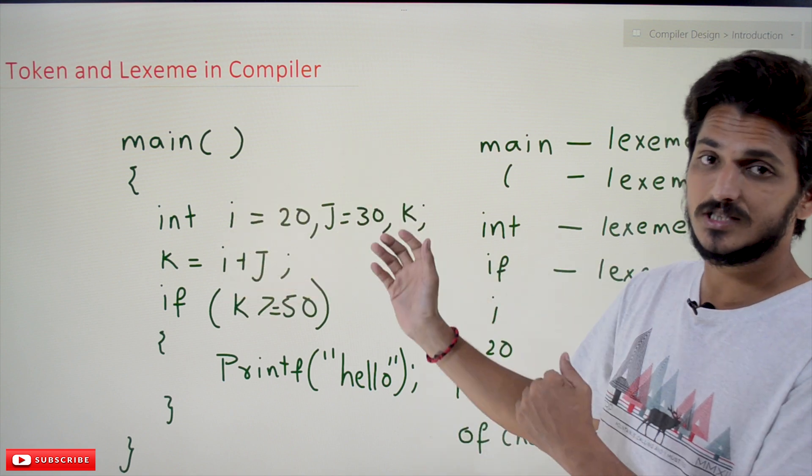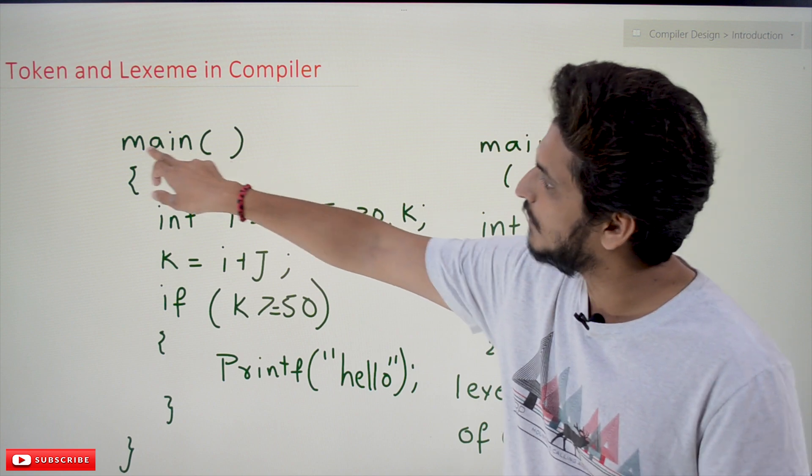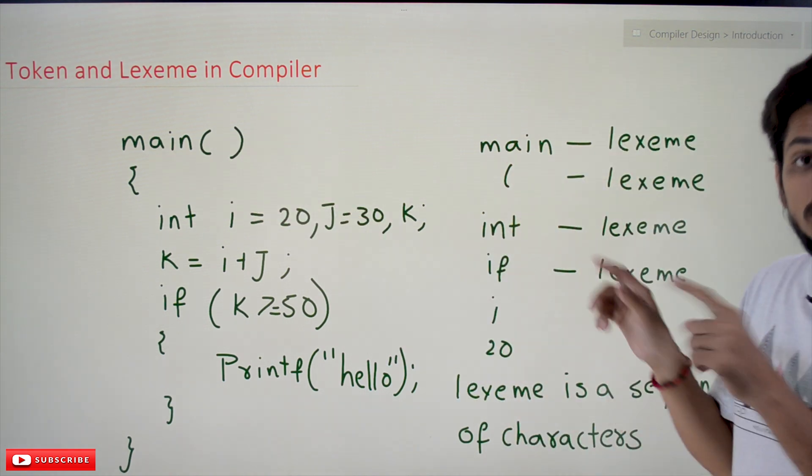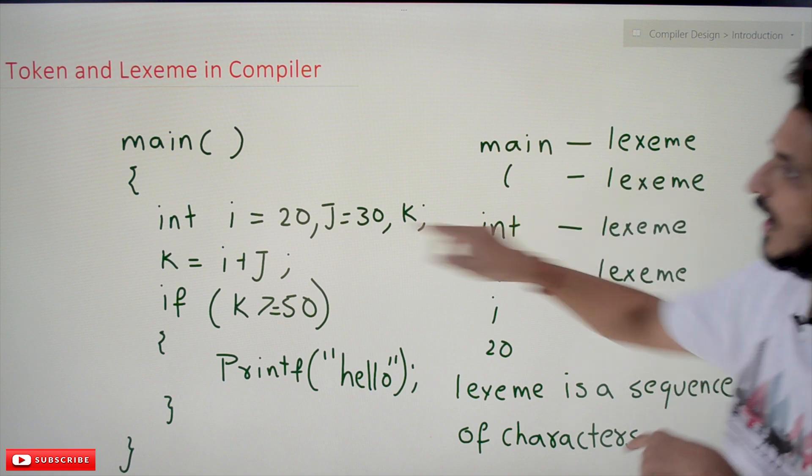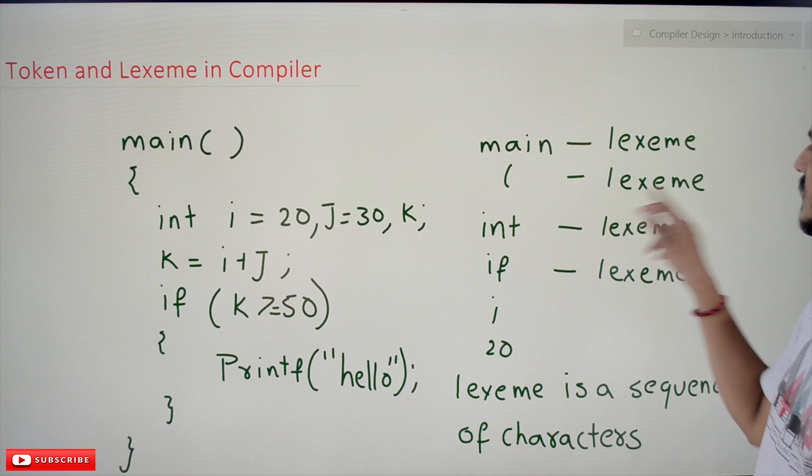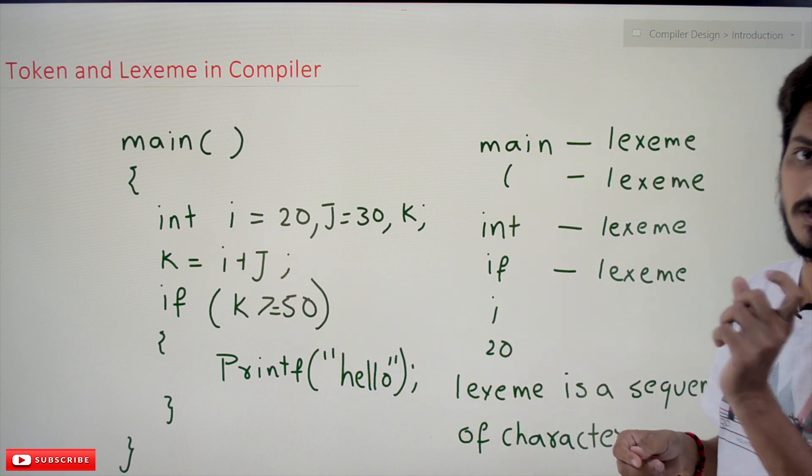The lexical analysis phase is going to read the characters one by one. Main is separated as a word, main. This we call it as a lexeme. After that, one open bracket, yes, it is a lexeme. Closed bracket, it is a lexeme. It has read the int, it has separated it, int. So it is a lexeme.